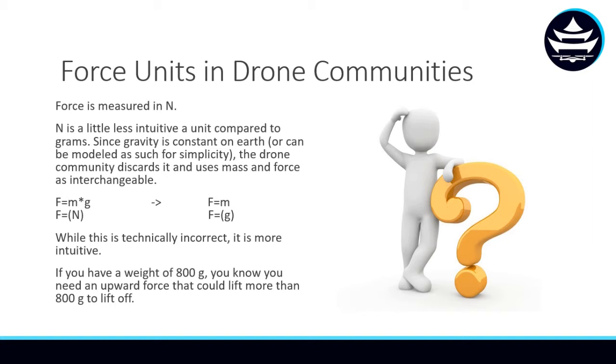Newtons is less intuitive than grams would be, and so in the drone community, they do a little bit of unit wizardry, wizard trickery. It's not technically accurate, but it is more intuitive. On the left here, we have f equals mass times gravity, which gives you units of newtons. What the drone community does is they say, gravity is constant all over the world. That's not actually technically true, but for simplicity's sake, gravity is constant. So, let's drop the g and make force equal to grams. Now when we're doing our force balances, we can just deal with grams instead of newtons, which is less intuitive. Back to our drone, if its weight is 800 grams, we know we need an upward force that could lift more than 800 grams to lift off. The other way of saying that would be you would need more than 7.9 newtons of thrust in order to lift off.